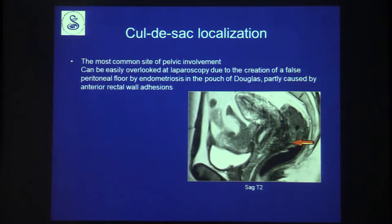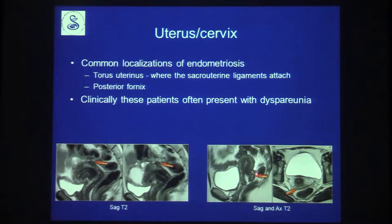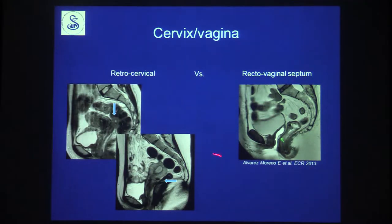The torus uterinus — where the sacro-uterine ligaments attach — is a very common site. The cervix and posterior fornix of the vagina are also common locations. When gynecologists refer to rectovaginal endometriosis, they often mean retrocervical. Opacification of the vagina can make lesions much easier to identify. If the uterus is retroflexed, retrocervical lesions are much more difficult to find, especially when small.